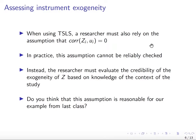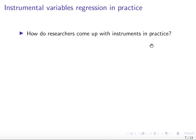For the rest of this lecture, we're going to go over the examples we saw in all the classes, starting with the last class, to understand whether we should believe the instruments that were used. First, let's discuss how researchers come up with instruments in practice. Thinking back on the war example and rainfall, the relevance was quite simple — we knew by thousands of years of people growing yields that rain is good for yields.